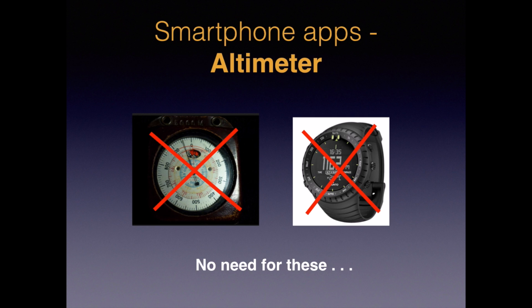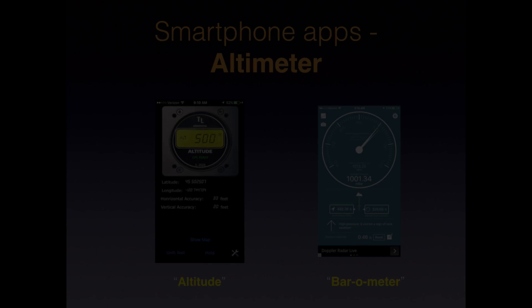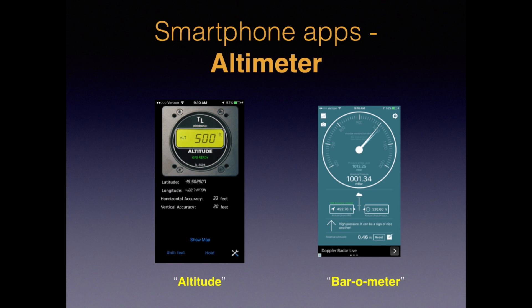Now let's get into a few useful smartphone apps. Many newer smartphones have a barometer, which turns your phone into an altimeter. I've found that phone apps show elevation very comparable to my expensive altimeter watch. Here are two free altimeter apps I've been using with good results: one simply called Altimeter, which shows your altitude along with current latitude and longitude; and a fancier model called Bar-o-meter that shows barometric pressure, which you can use as a rough way to forecast incoming weather.